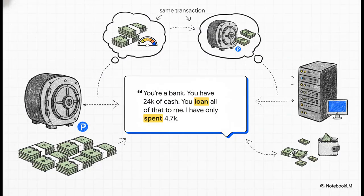Proxmox is the bank. It loaned out 24 gigs of RAM, and as far as the bank is concerned, that cash is out of the vault — it's gone. But you, the VM, have only actually spent a little bit of it. The rest is just sitting there ready to be used. Both are correct; you're just looking at the transaction from different points of view.